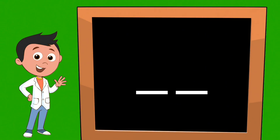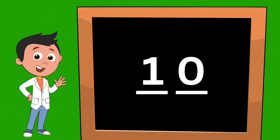The number on the right represents how many ones there are, and the number on the left represents the tens. Double-digits can be any number from 10 to 99.